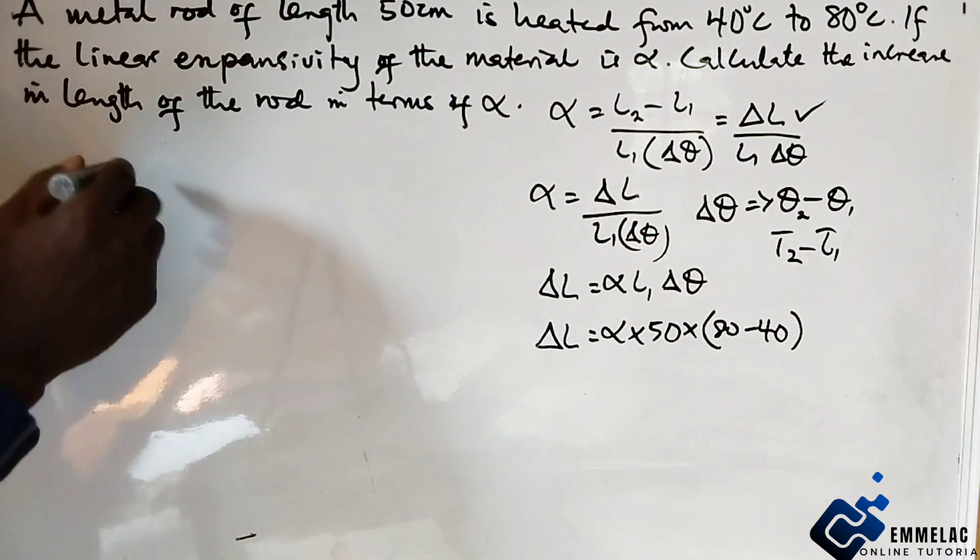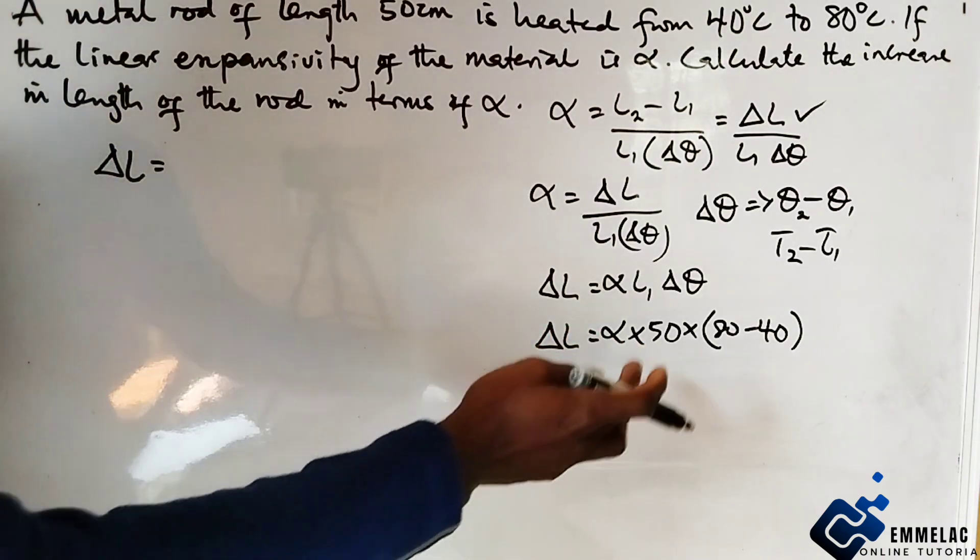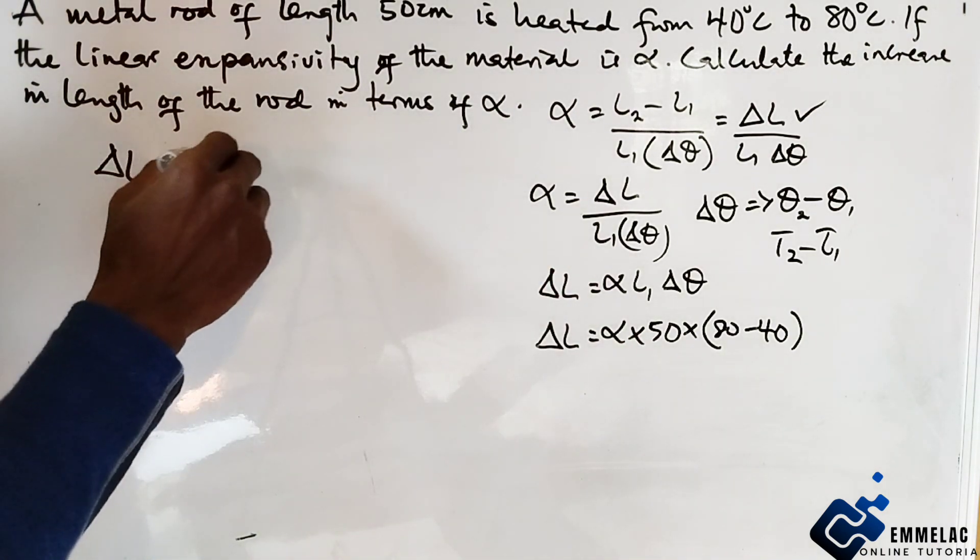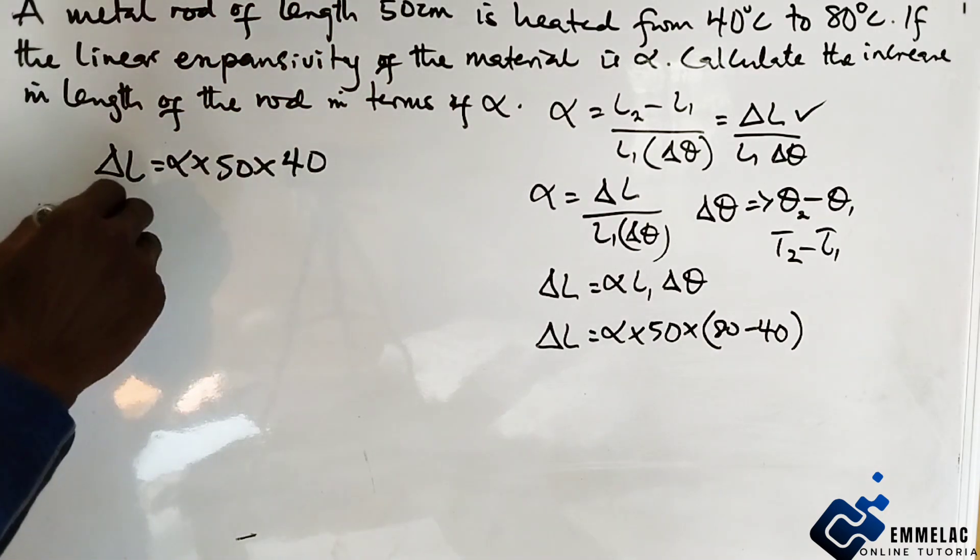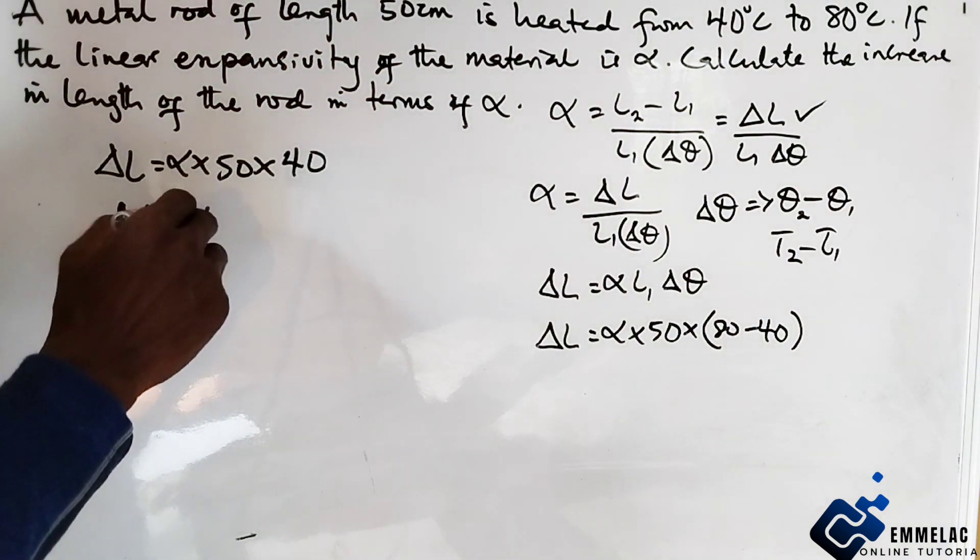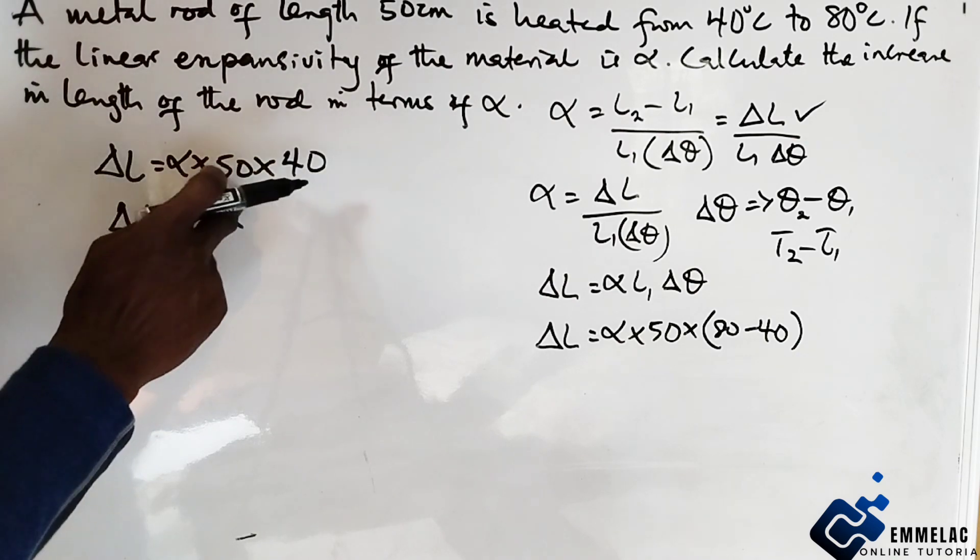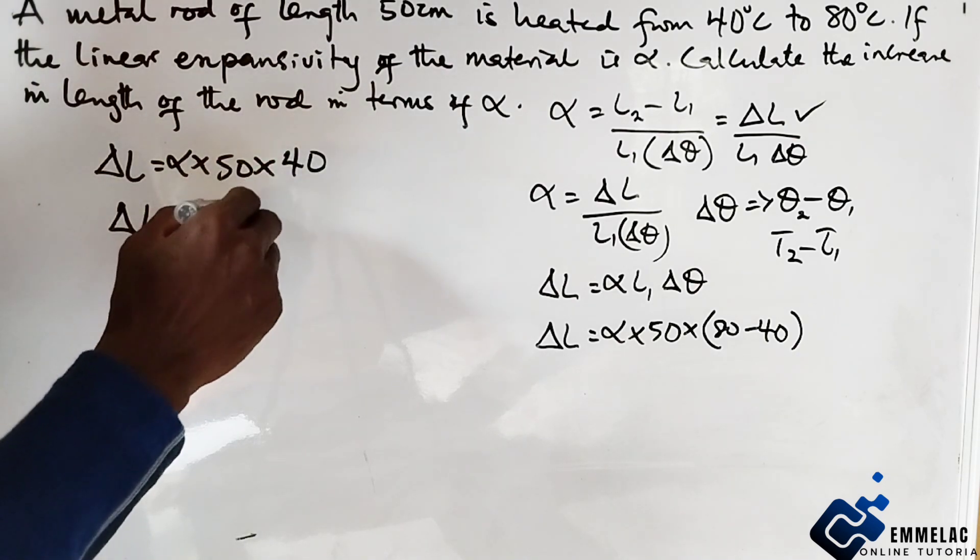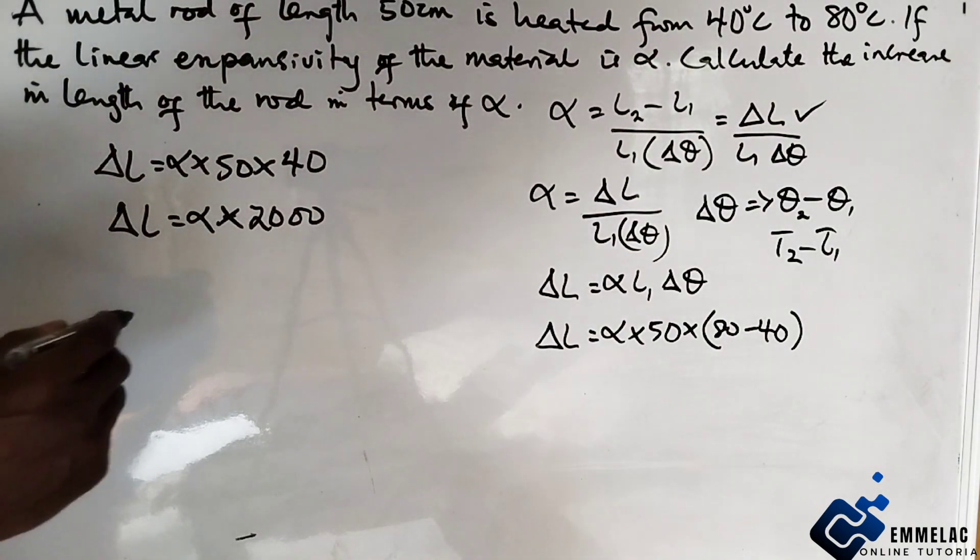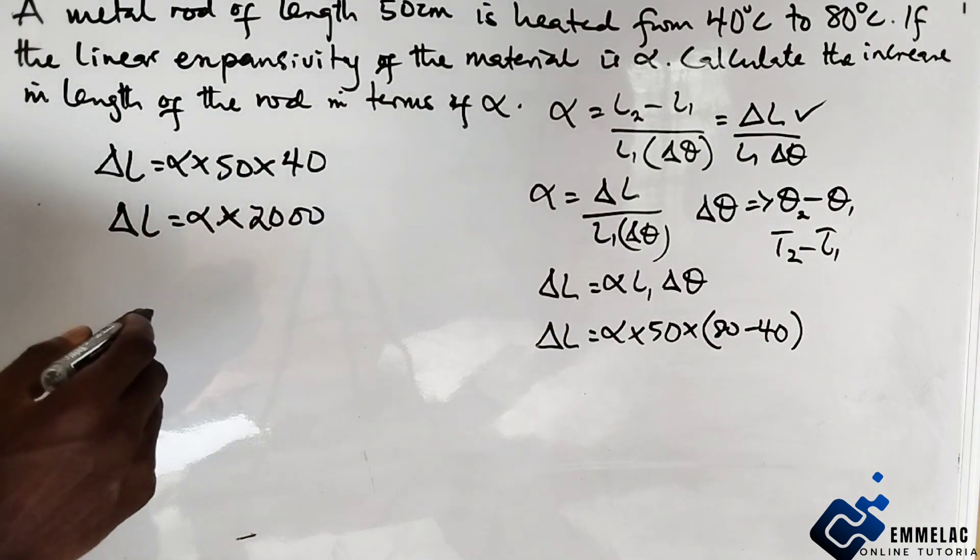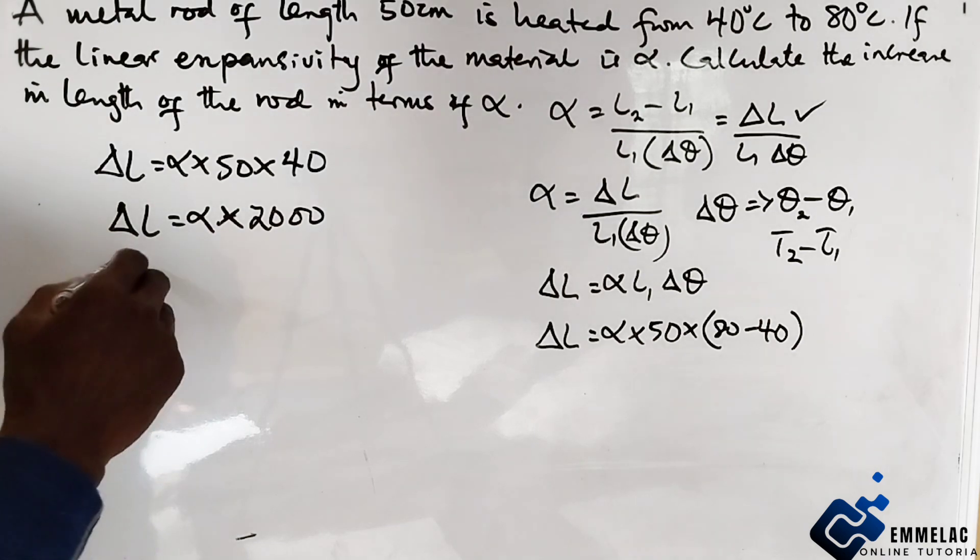Let's come over here. We have alpha times 50 times 40. So 50 times 40 gives us 2000.